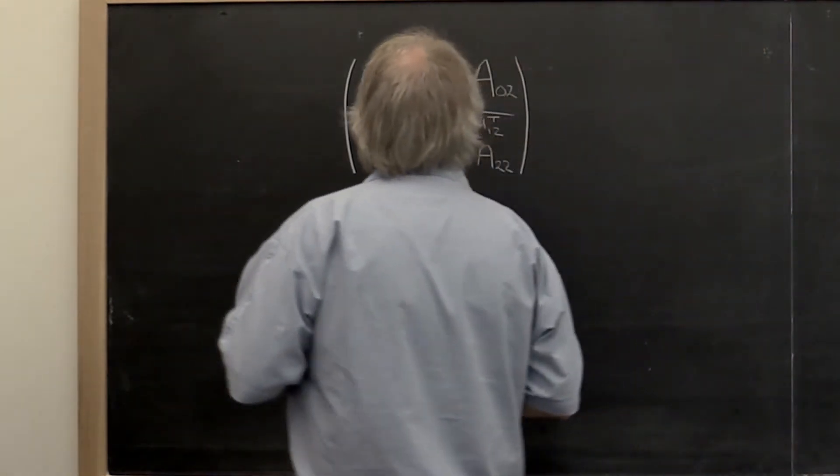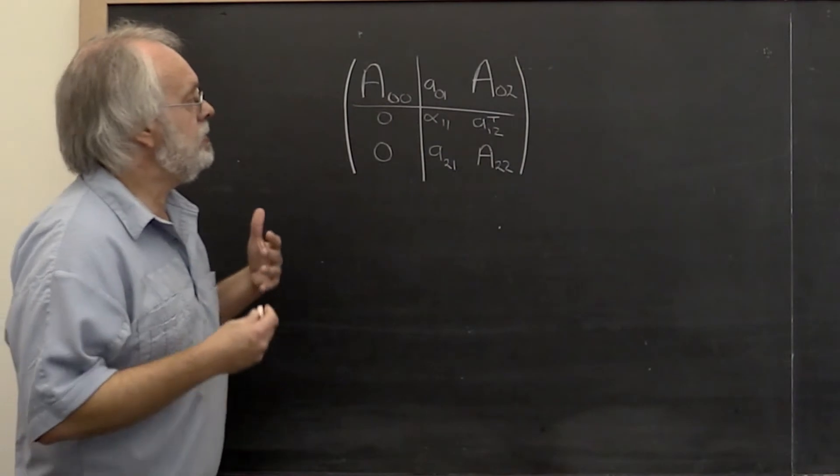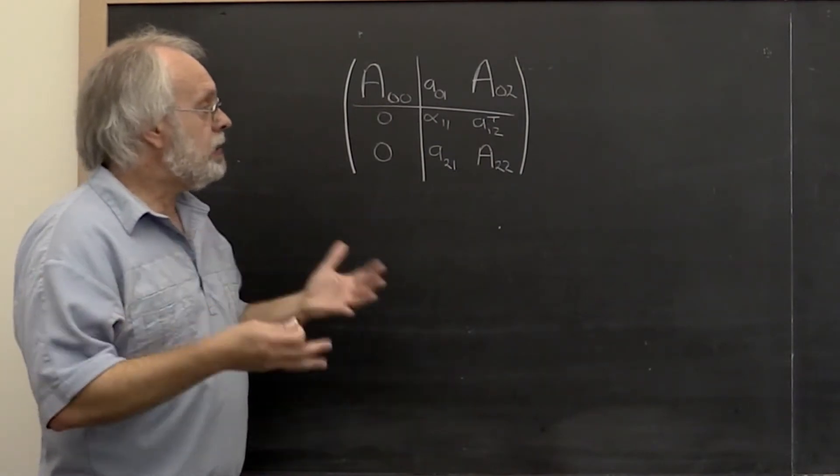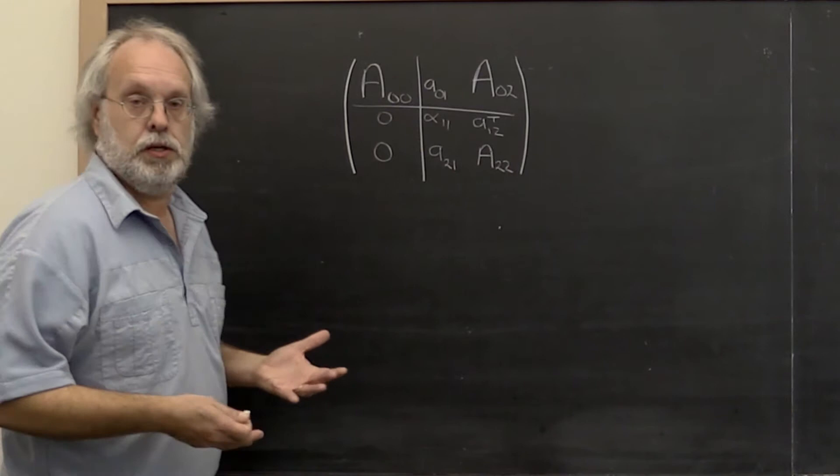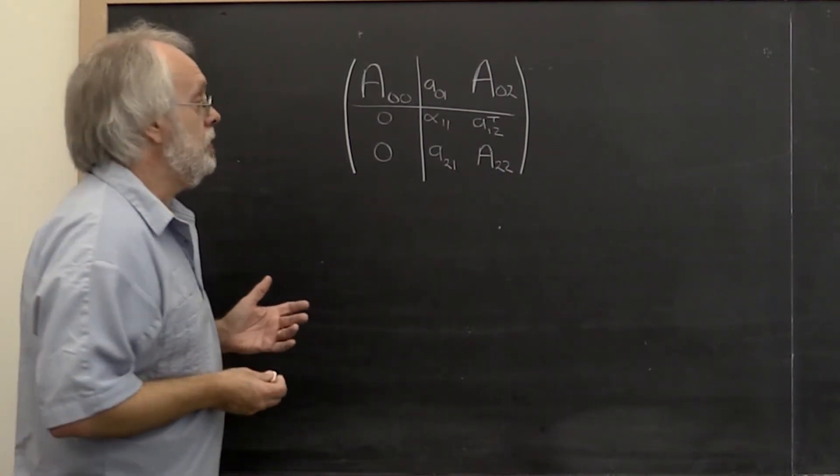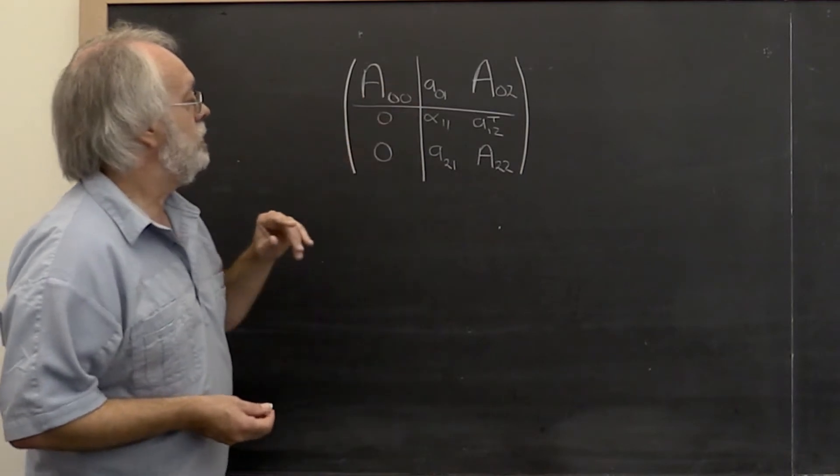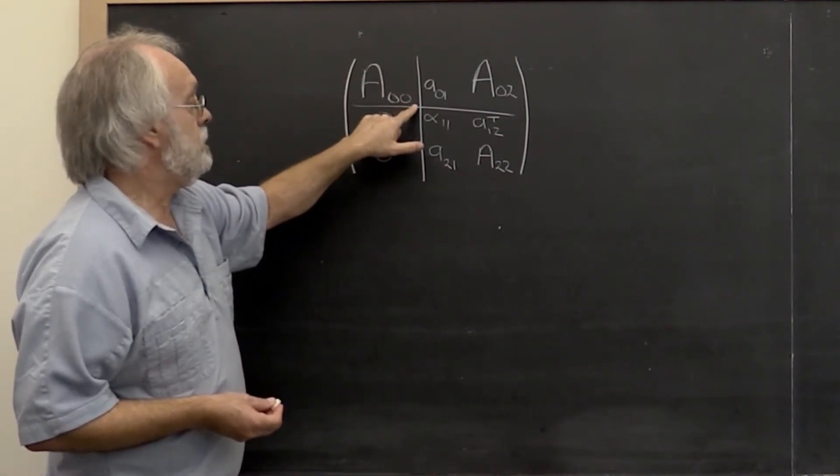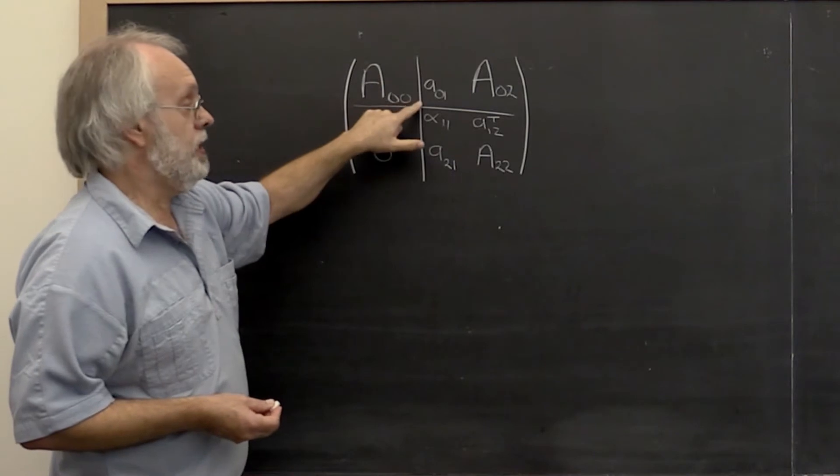So let's say that the right-looking algorithm for LU factorization, the one that we showed was the same as Gaussian elimination, has proceeded so that A00 has been updated with an upper triangular matrix.